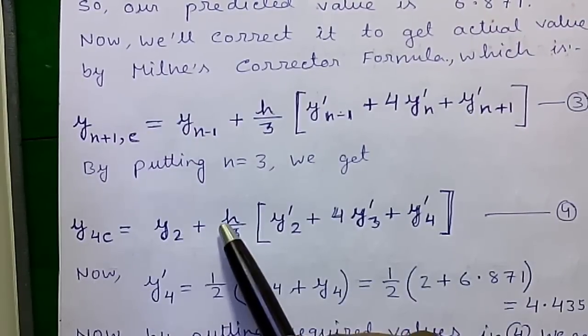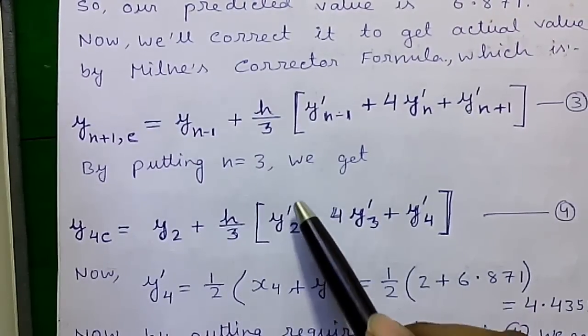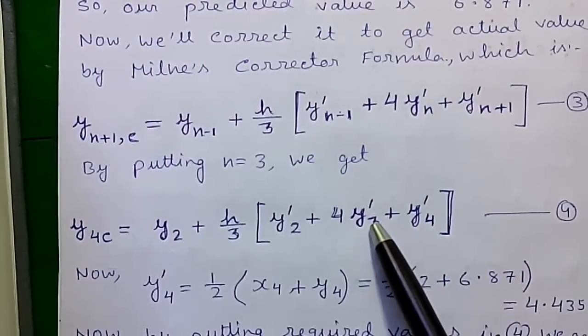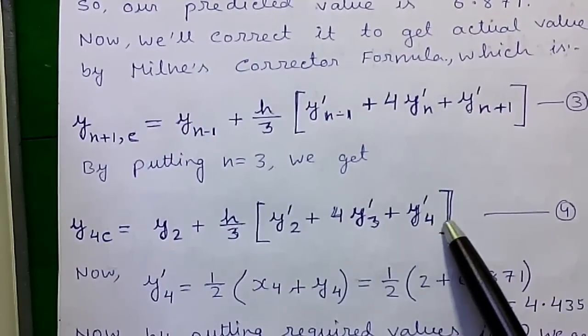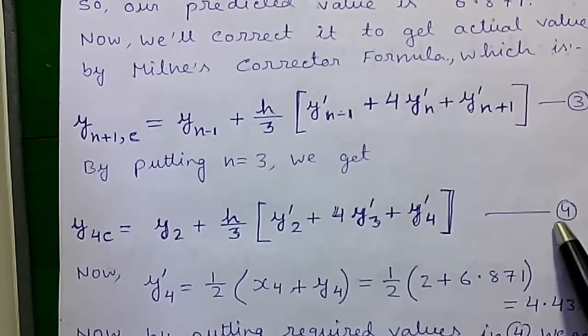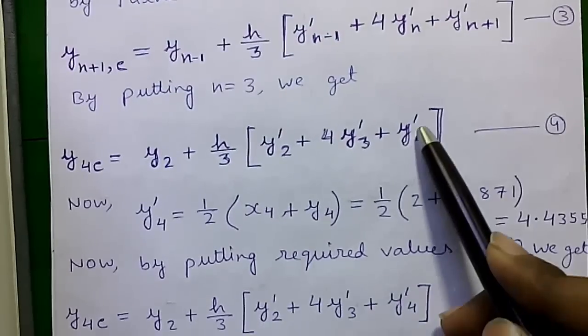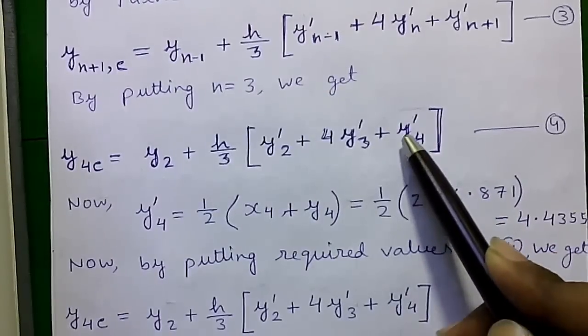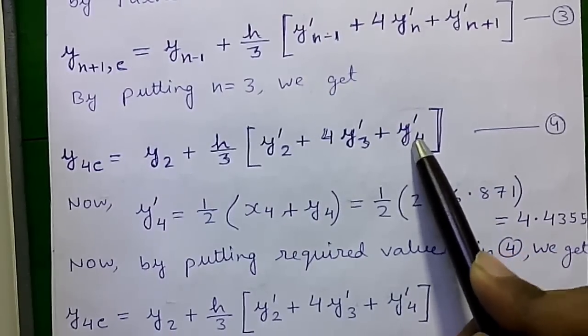So by putting n equals 0 we will get y(4,c), where c represents the corrector formula, equals y(2) plus h/3 times [y'(2) plus 4y'(3) plus y'(4)] which is our formula number 4. You can see this value we don't have right now. Y'(4) value. We have to calculate it.